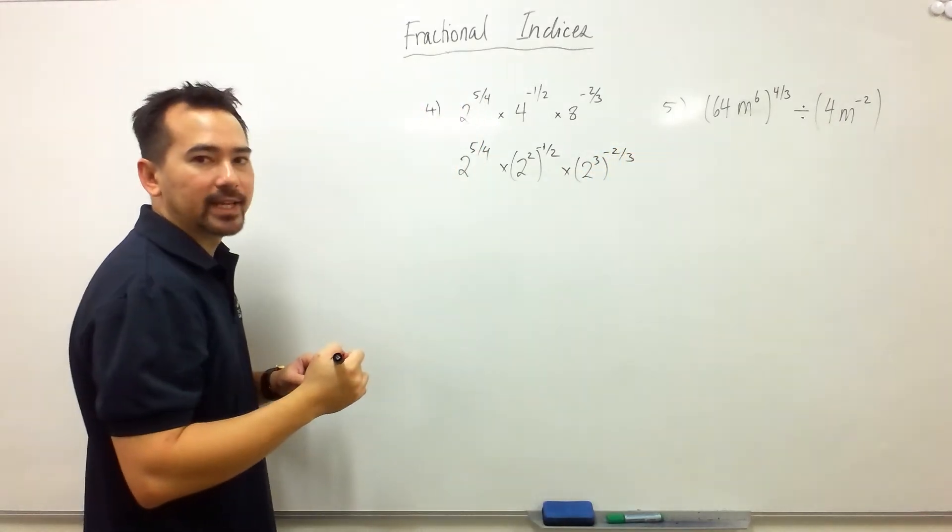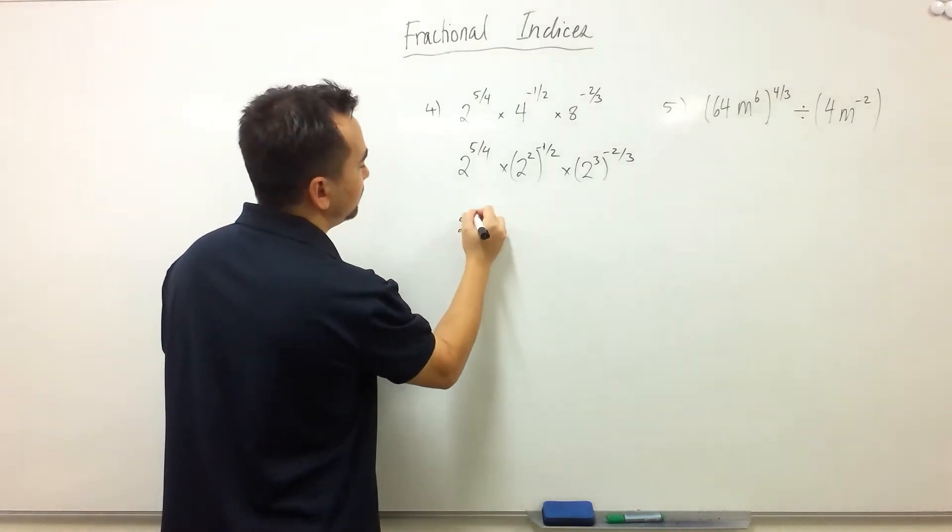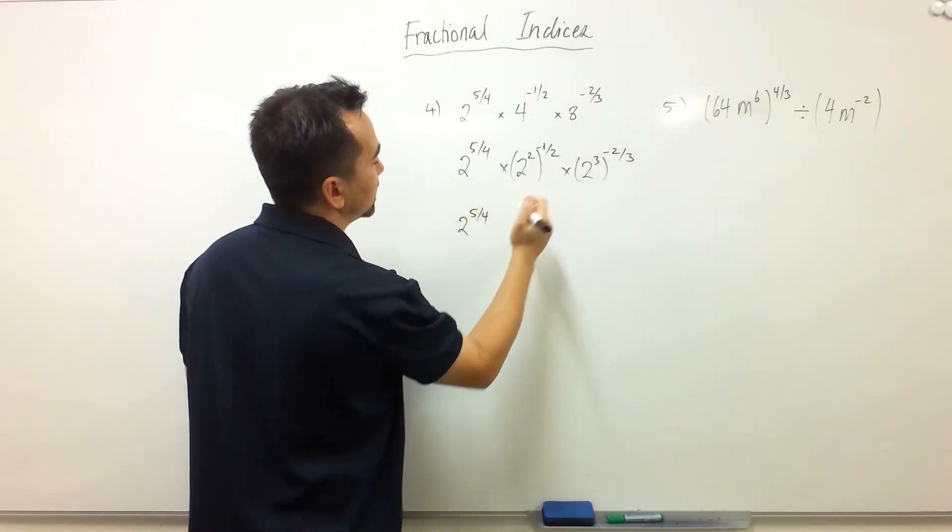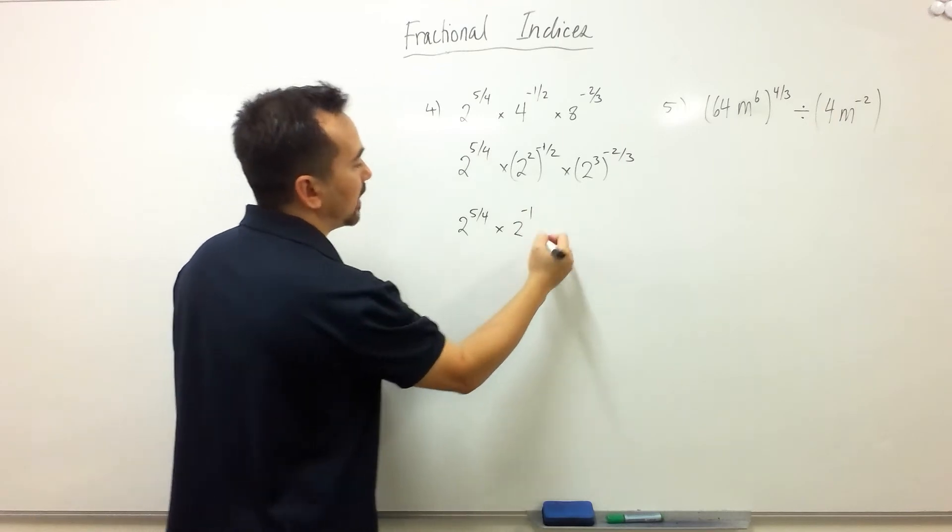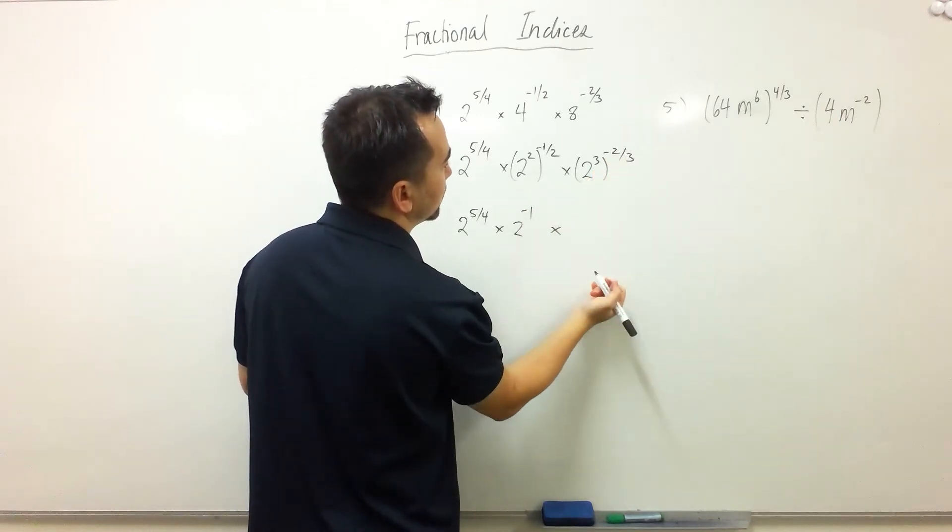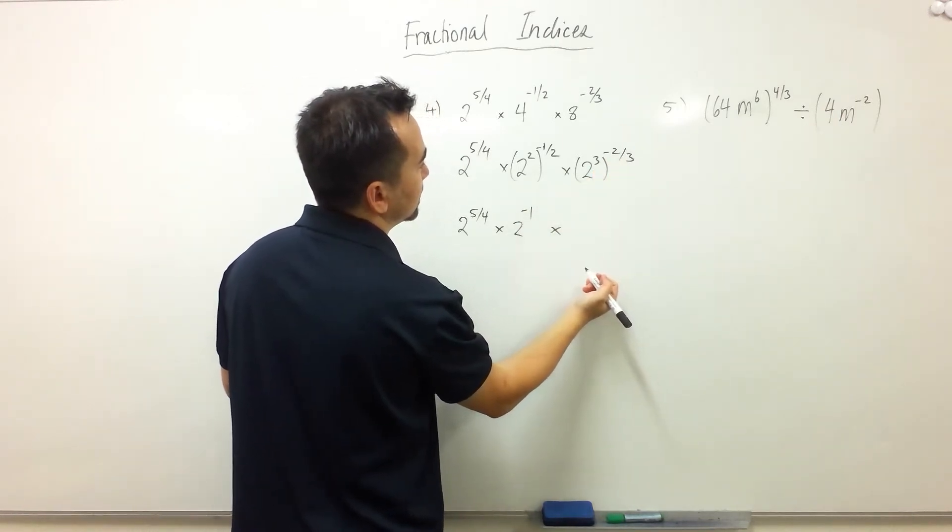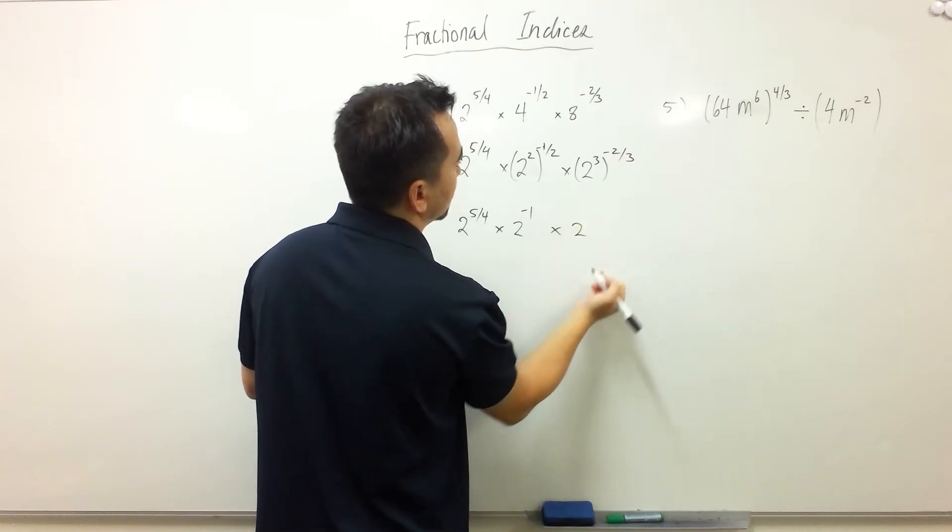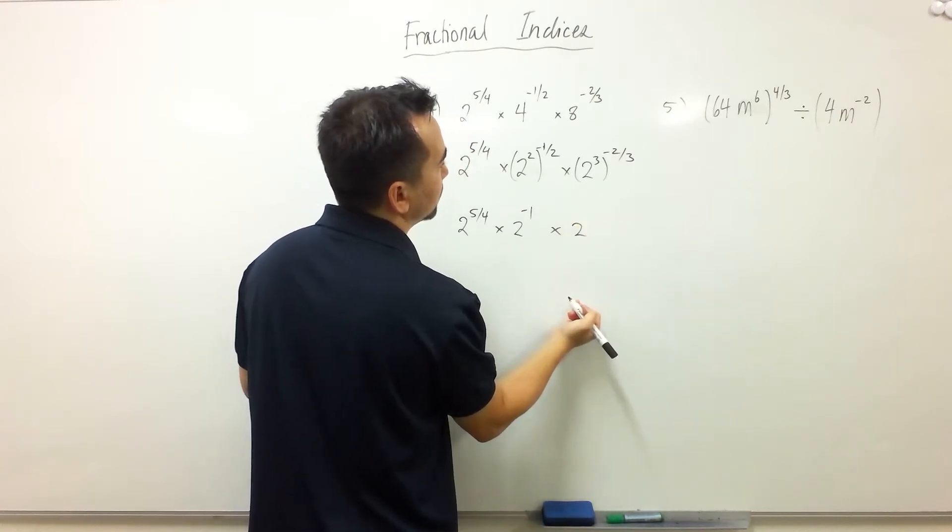We'll expand the brackets now and say that 2 times negative 1 half is 2 to the power negative 1 and 3 times negative 2 thirds is the same as 2 to the power negative 2.